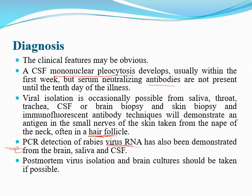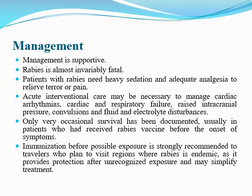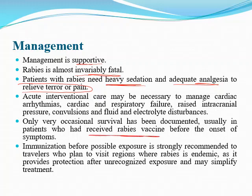Post-mortem virus isolation and brain culture should be taken if possible. Management is only supportive and rabies is invariably fatal. Patients need heavy sedation and adequate analgesia to relieve terror and pain. Acute intervention may be necessary to manage cardiac arrhythmia, respiratory failure, raised intracranial pressure, and convulsion. All management in the ICU is supportive, not specific for the disease. Only very occasional survivors have been documented, usually in patients who received the rabies vaccine before onset of symptoms.